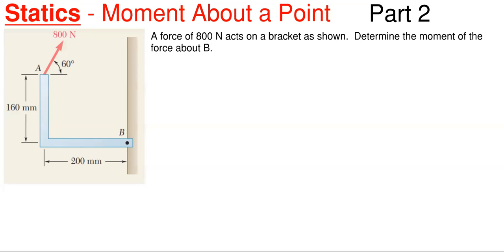So in today's video, we're going to be covering statics and we're going to be looking at how to find moment about a point and this will be our second part in this series. So what we have going on here today is that we have this object here on the left and we have a force of 800 newtons that acts on this bracket as shown and we have to determine the moment of this 800 newtons of force about point B down here.